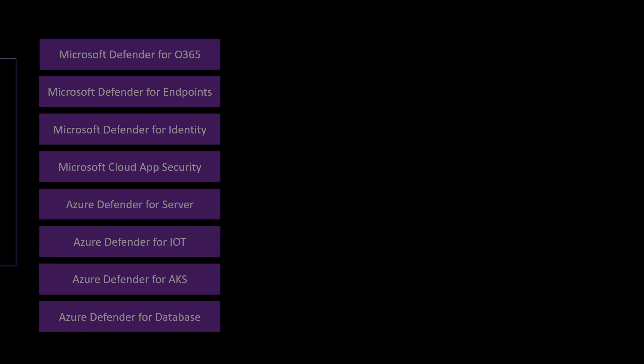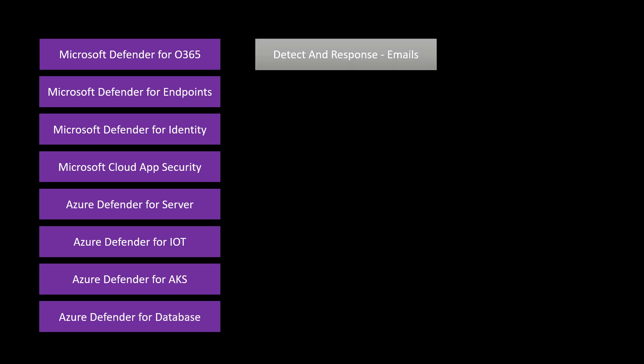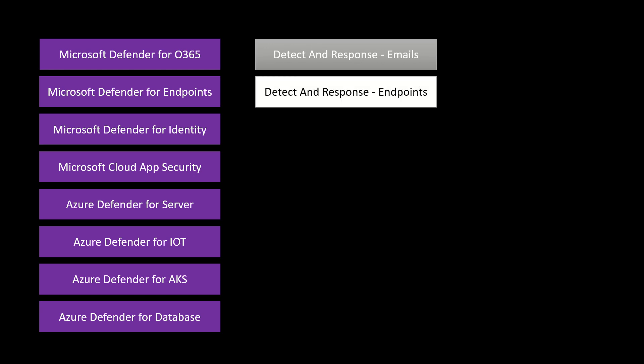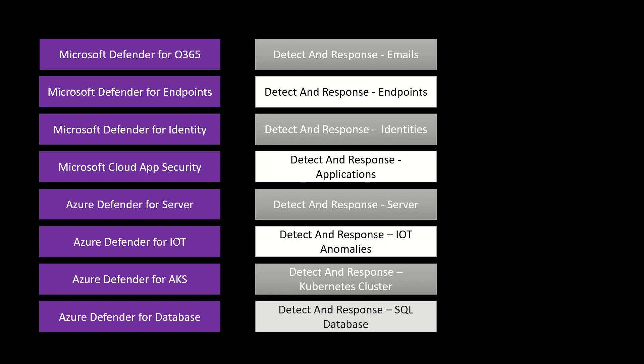Now let's talk about how this branding is going to help with XDR and what the purpose behind it is. Microsoft Defender for Office 365 detects and responds to email threats. Microsoft Defender for Endpoints is specifically for endpoints. Microsoft Defender for Identity is there to secure identities. The same process goes on for all these different security products.